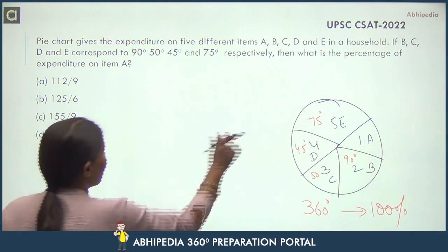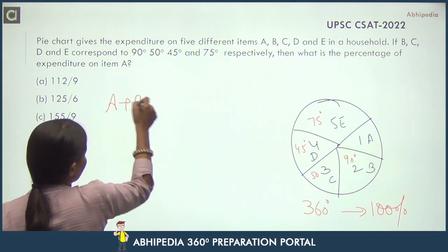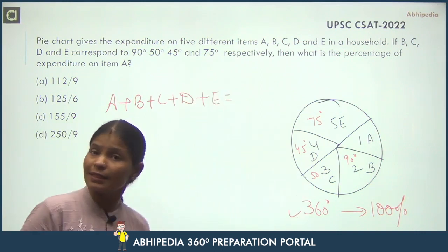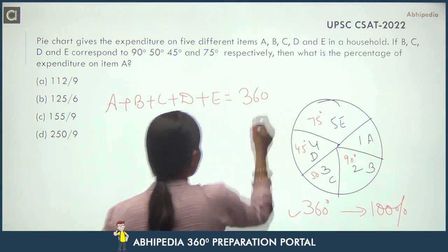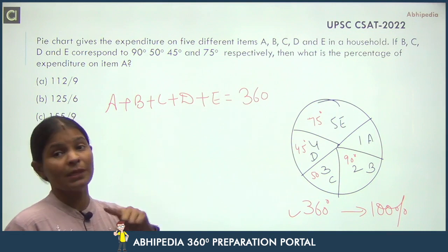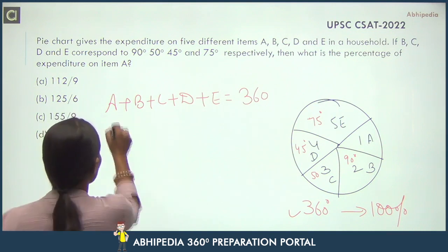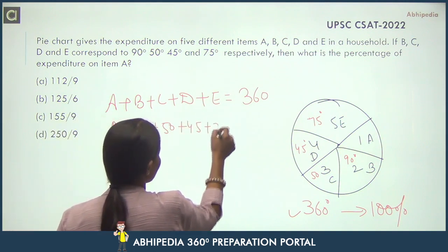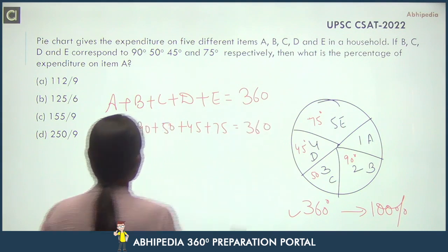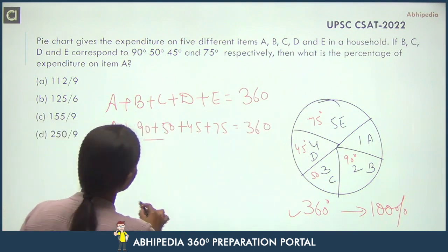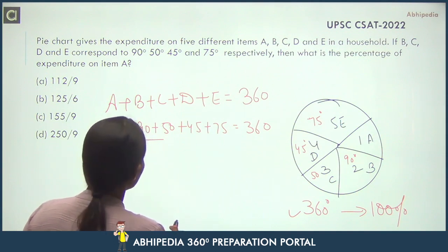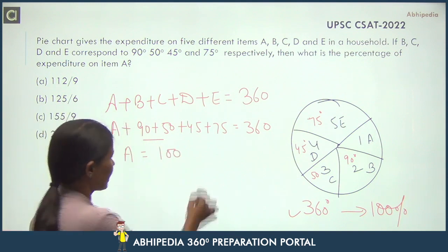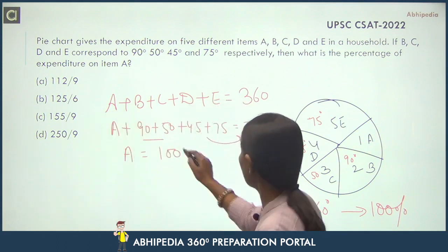Aapke paas A, B, C, D, E hai — sabhi ka sum total 360 degrees hai. Aur mere paas B, C, D, E ki values hain: 90, 50, 45 and 75. Kitna ho gaya? This is 140 and this is 120, so 260 total. That means A ki value kya aapke paas? This is 100 — 100 degrees. This data is in degrees.